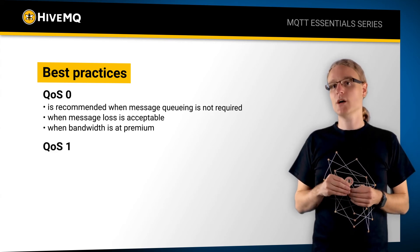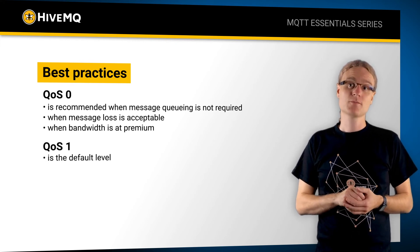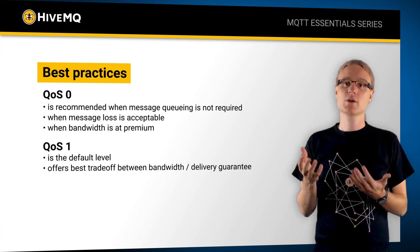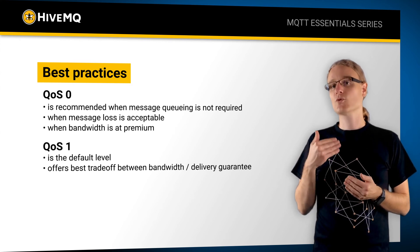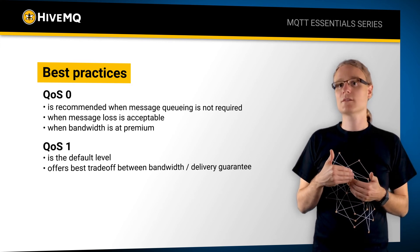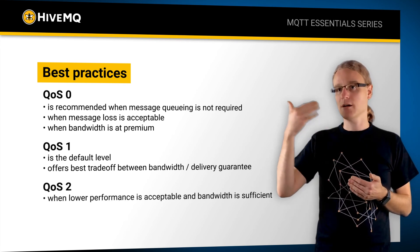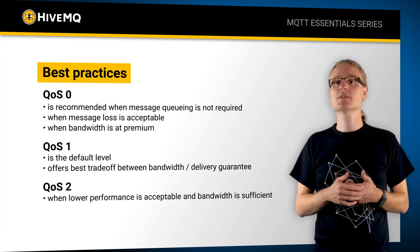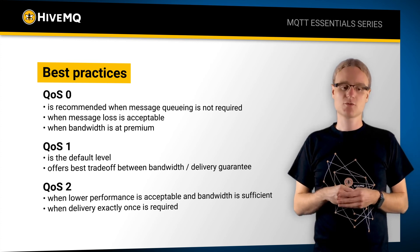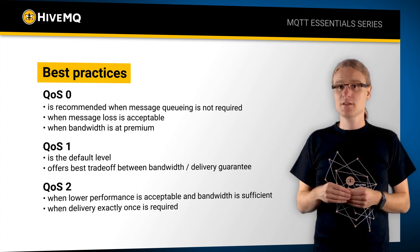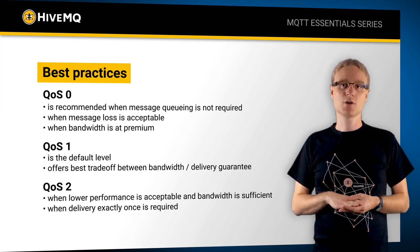Use quality of service one as a default if you don't know what you need — it offers a great trade-off between bandwidth and message delivery guarantees. If you don't need high performance or can accept higher bandwidth usage, and you really need exactly once delivery, then quality of service two is what you choose. In the use cases I've seen over the years, most use quality of service one as the default.